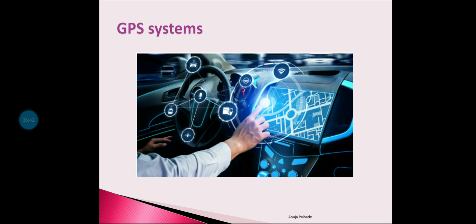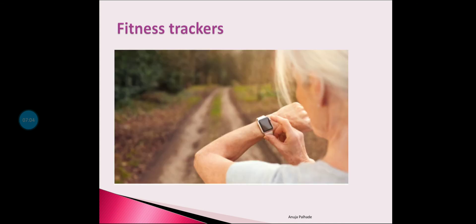The second application is the GPS system. GPS is a navigation system that uses satellites and receivers to synchronize data related to location, time, or velocity. The receiver uses an integrated embedded system to facilitate GPS applications. Examples include cars, mobile devices, and palmtops.